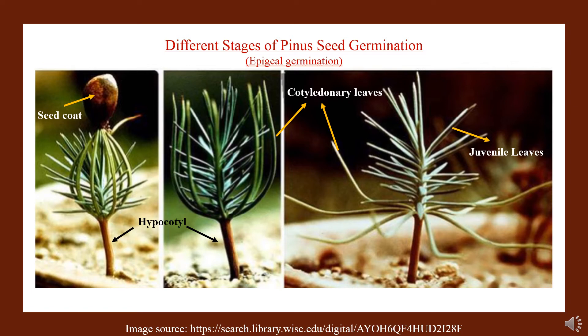After knowing the structure of the seed, let's see how Pinus seed germinates. The germination is of epigeal type — a long hypocotyl is formed which brings the cotyledons and seed coat out of the soil surface. Cotyledons are linear green structures and will provide nourishment to the new plant body before true leaves are formed, hence they are known as cotyledonary leaves. Next, new juvenile leaves are formed that take over the function of photosynthesis for the plant, and this is how a new Pinus plant is formed.